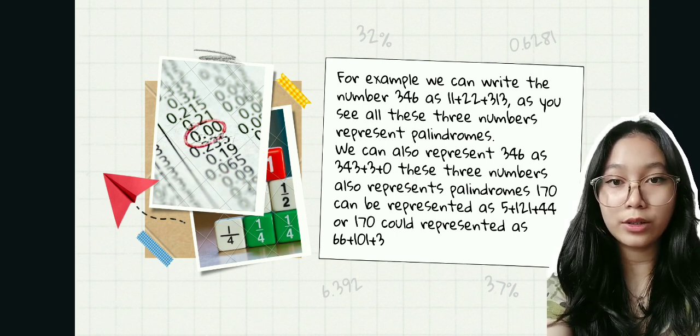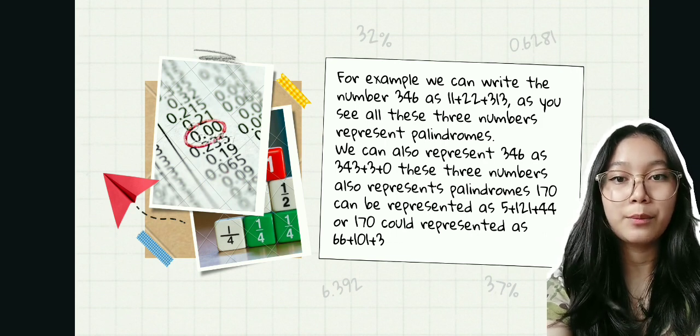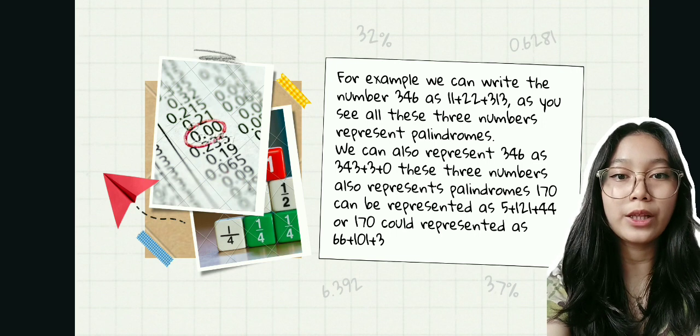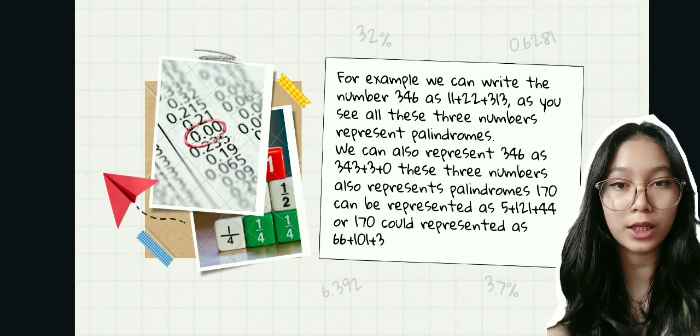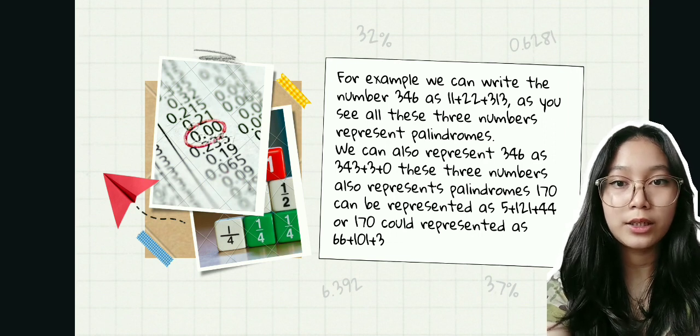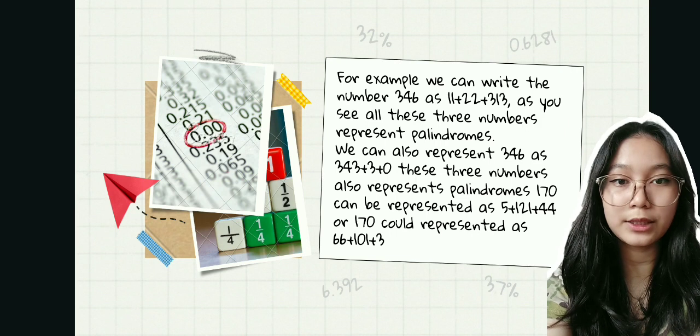we can write the number 346 as 11 plus 22 plus 330. As you see, these three numbers represent palindromes. We can also represent 346 as 343 plus 3 plus 0. These three numbers also represent palindromes.